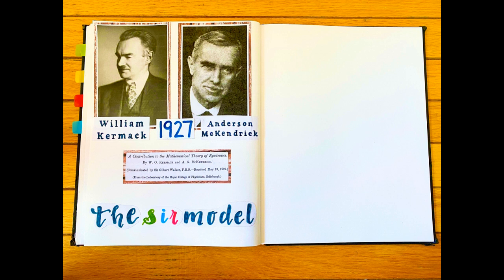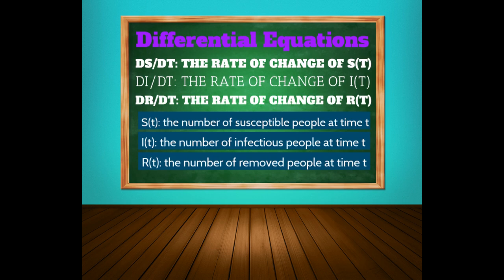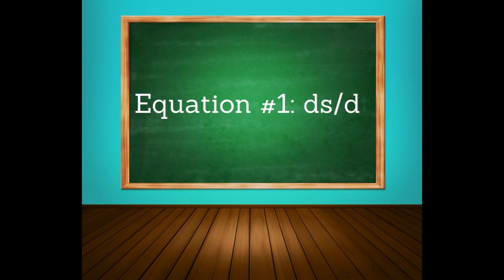In their model, Kermick and McKendrick separate a population into groups based upon infectious status and use differential equations to represent the rate of change of each group as people transition from one group to another when their infectious status changes.